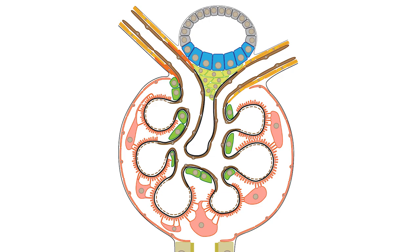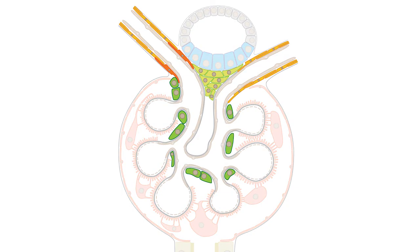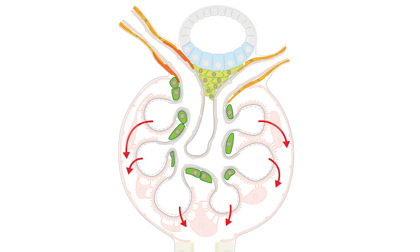Surrounding the endothelial cells of the afferent and efferent arterioles are smooth muscle cells. They influence the glomerular filtration rate by regulating the vascular resistance of these two arterioles.